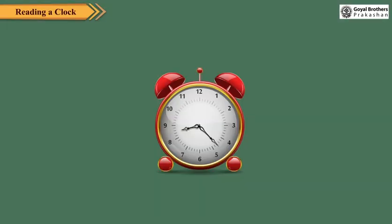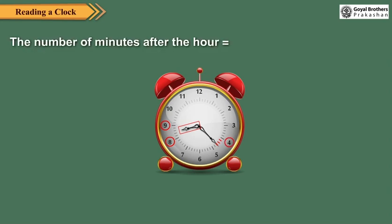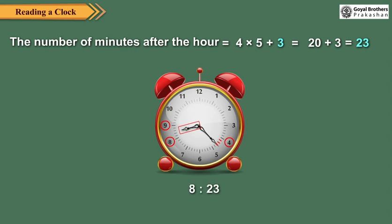Look at this clock. The hour hand is between 8 and 9. The minute hand is 3 small divisions beyond 4. So the number of minutes after the hour is equal to 4 × 5 plus 3, which equals 20 plus 3, and that is 23. So the time on the clock is 8.23.